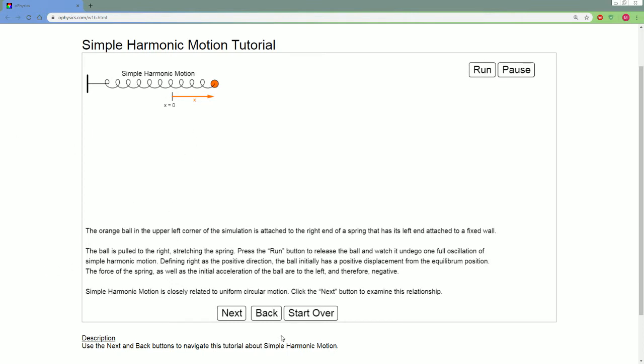So here, the orange ball in the upper left corner of the situation is attached to the right end of a spring that has its left end attached to a fixed wall. The ball is pulled to the right, and it will undergo a full oscillation called simple harmonic motion. We're going to define the right as the positive direction. The ball has initially a positive displacement.